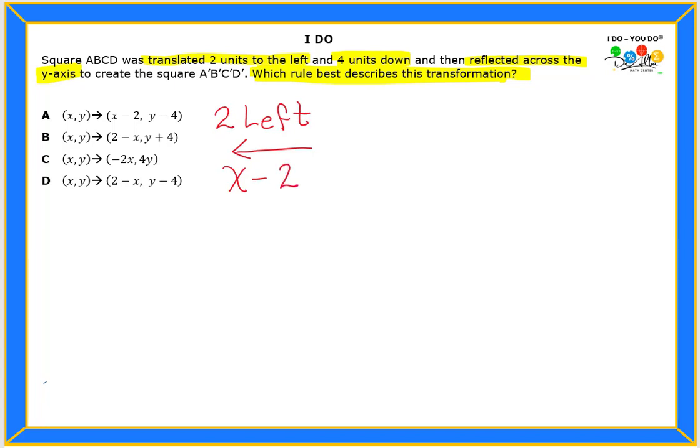Now what about the second rule? What happens after that? Well, it says that you're going to go four units down. And I'm going to show you an arrow pointing down, right? And again, this one is vertical, reminds me of a vertical line, right?